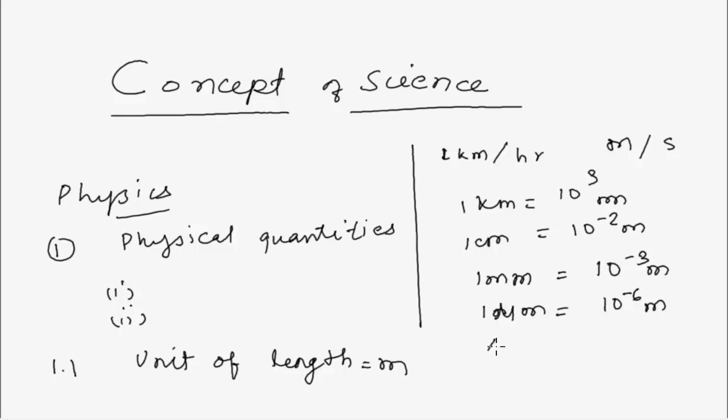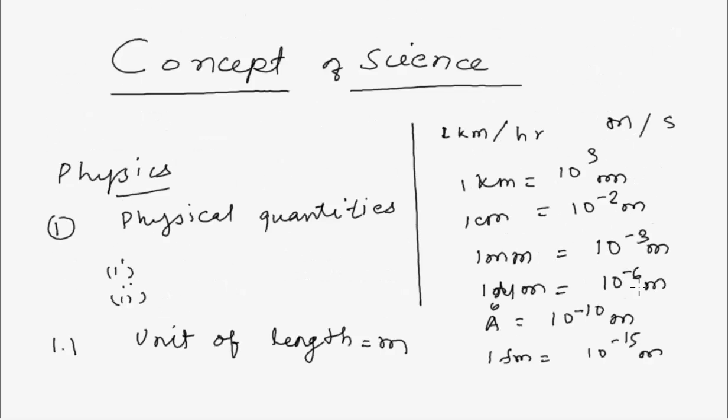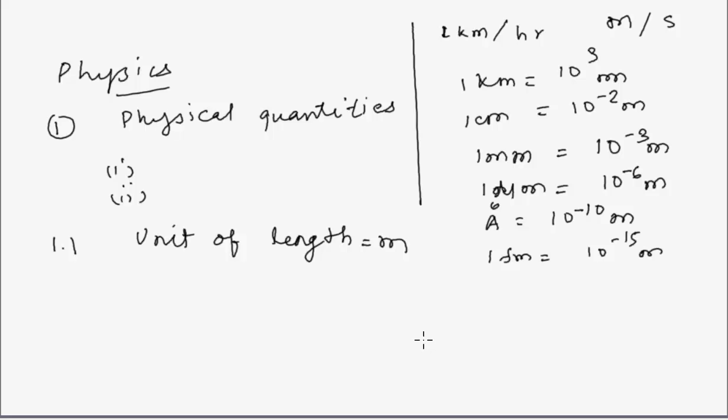Then there is one micrometer equals 10 to the power minus 3 meter. This is used directly in the examination. One angstrom equals 10 to the power minus 3 meter. Then there are others like femtometer. 1 femtometer equals 10 to the power minus 15 meter. So you are required to know these things.